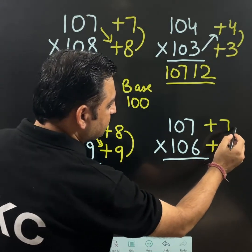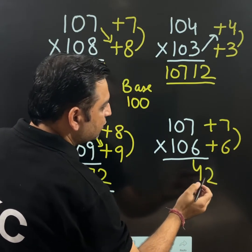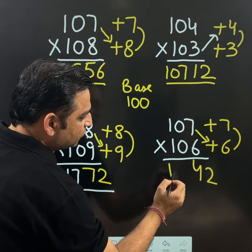Check the last one. 7 times 6 is 42. 107 plus 6 is 113.